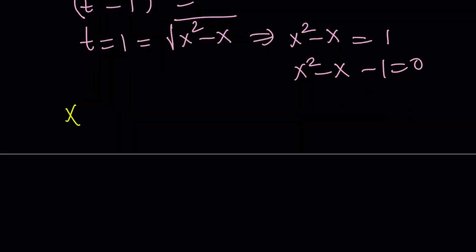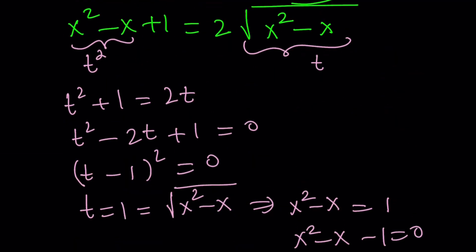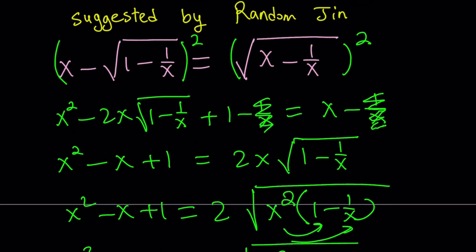This gives you x equals 1 plus root 5 over 2, or x equals 1 minus root 5 over 2. We get two solutions. You can also call them x1 and x2. It doesn't really matter. But we have to look at the following. We should have looked at it earlier but I just wanted to leave it for the end.